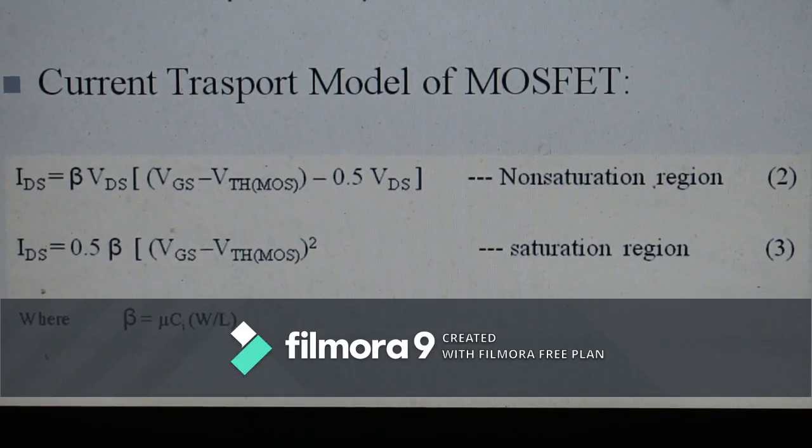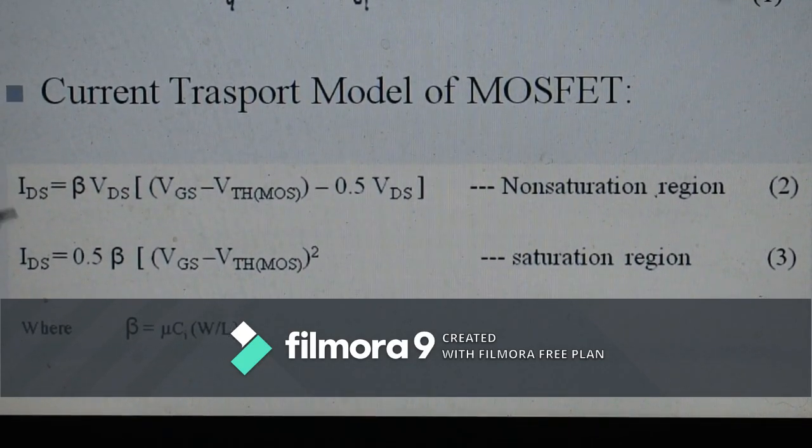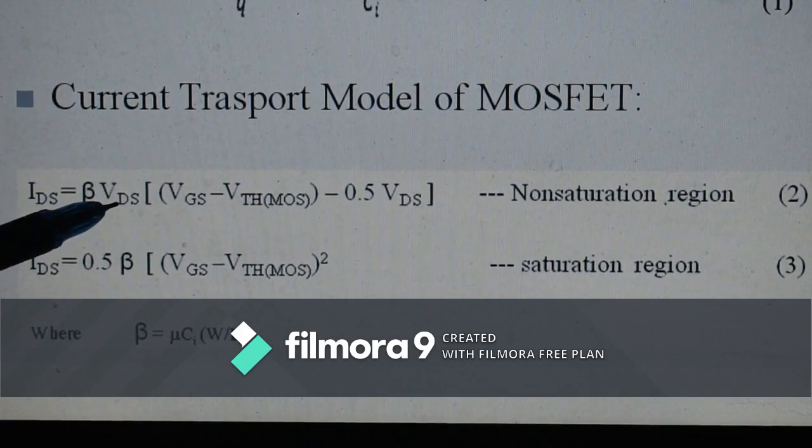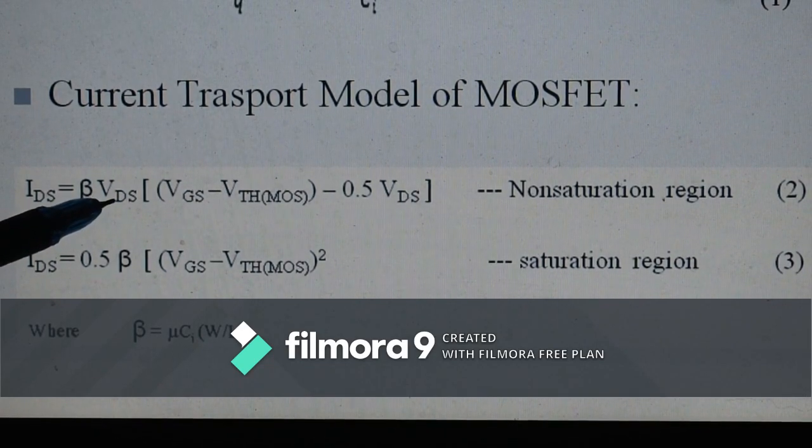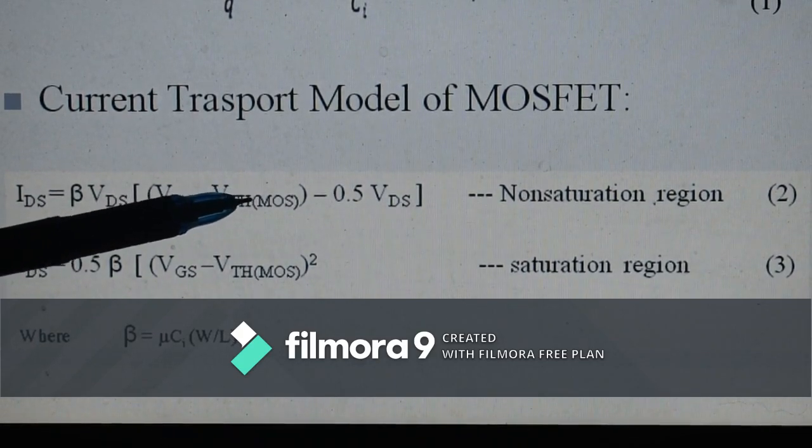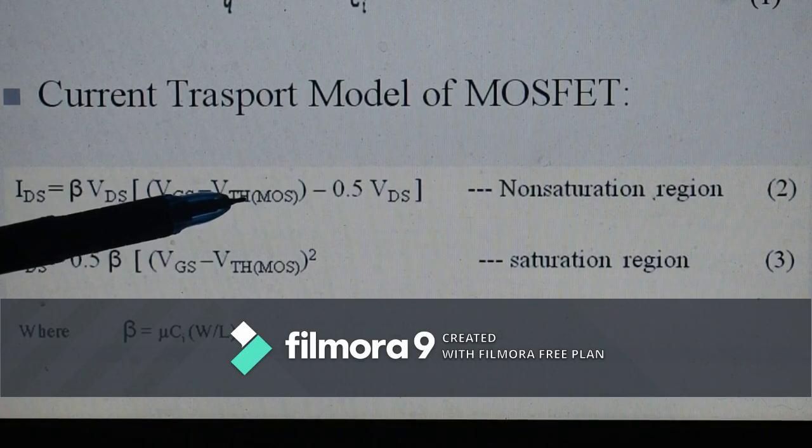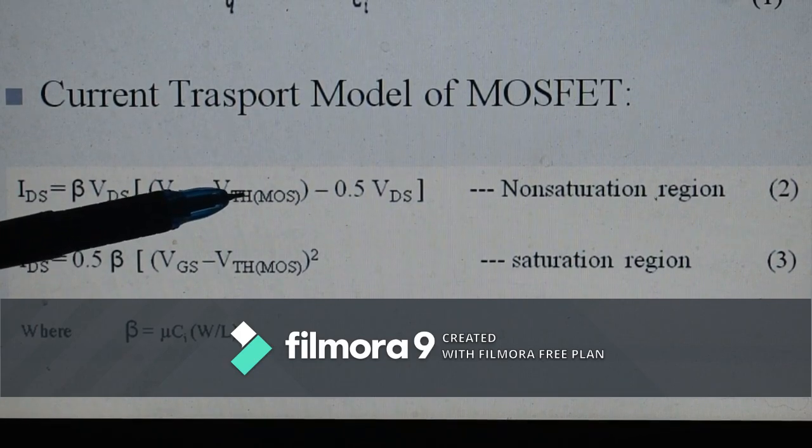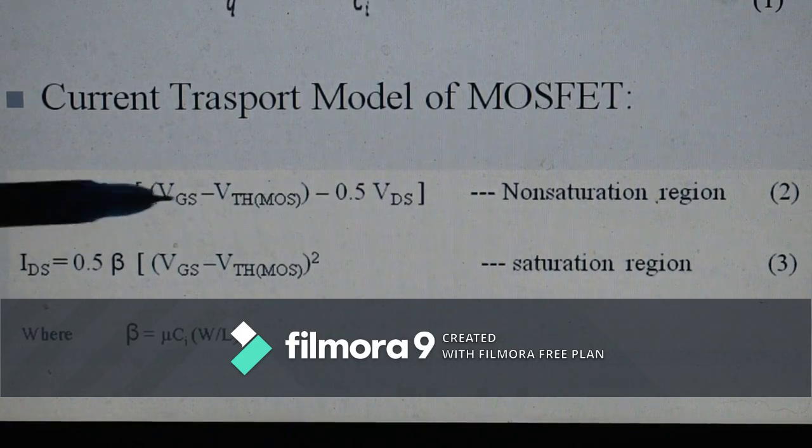From observation, it is clear that as far as current equation is concerned, beta is constant, VDS is kept constant through electronic circuit, and V-threshold MOSFET in fabrication process is so well controlled that it is always constant.